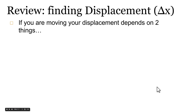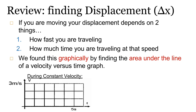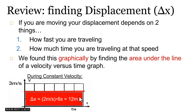If you're moving, your displacement depends on two things: how fast you're traveling, and how much time you're traveling at that speed. If you're moving faster, you go farther. If you're moving at the same speed for a longer time, you'll also go farther. Under constant velocity — say two meters per second for six seconds — we find displacement graphically by finding the area under the line on a velocity versus time graph. That area is a rectangle: height times width, two meters per second times six seconds, giving a displacement of 12 meters.